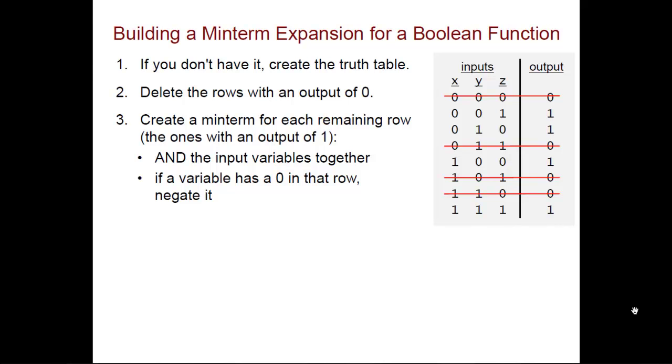For example, if we look at the second row here, the inputs are 0 for x, 0 for y, and 1 for z. So therefore, we have to negate the x and the y because they both have a value of 0. We don't negate the z because it has a value of 1. So that is the min-term for that second row.